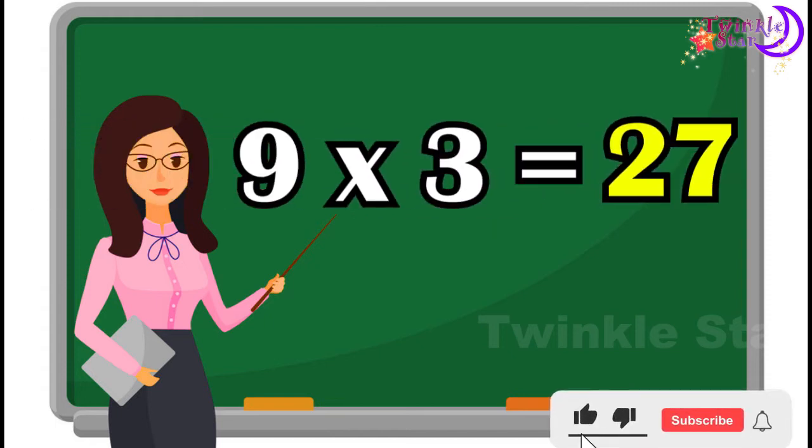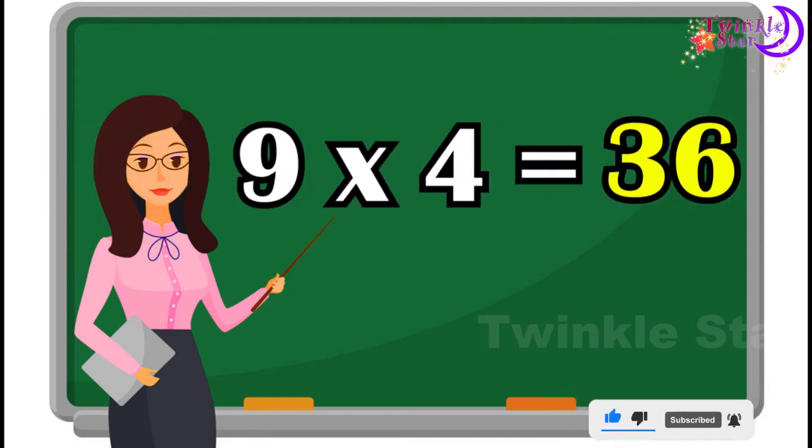9 3s are 27, 9 3s are 27, 9 4s are 36, 9 4s are 36.